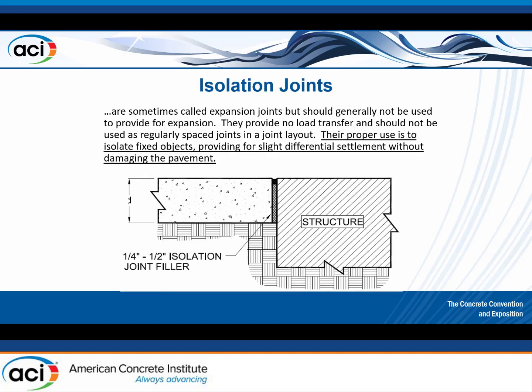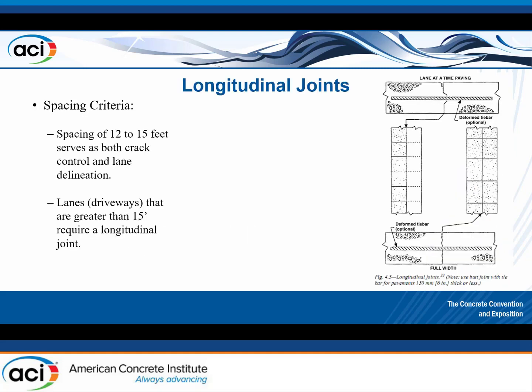Isolation joints — ACI names them exactly as they perform — are used to isolate fresh concrete from any fixed structure such as a manhole or column. You do not want fresh concrete to butt up and permanently bond with that structure, so you isolate it with isolation material. Isolation joints are often interchanged in the field with expansion joints, but they are two different types of joints.